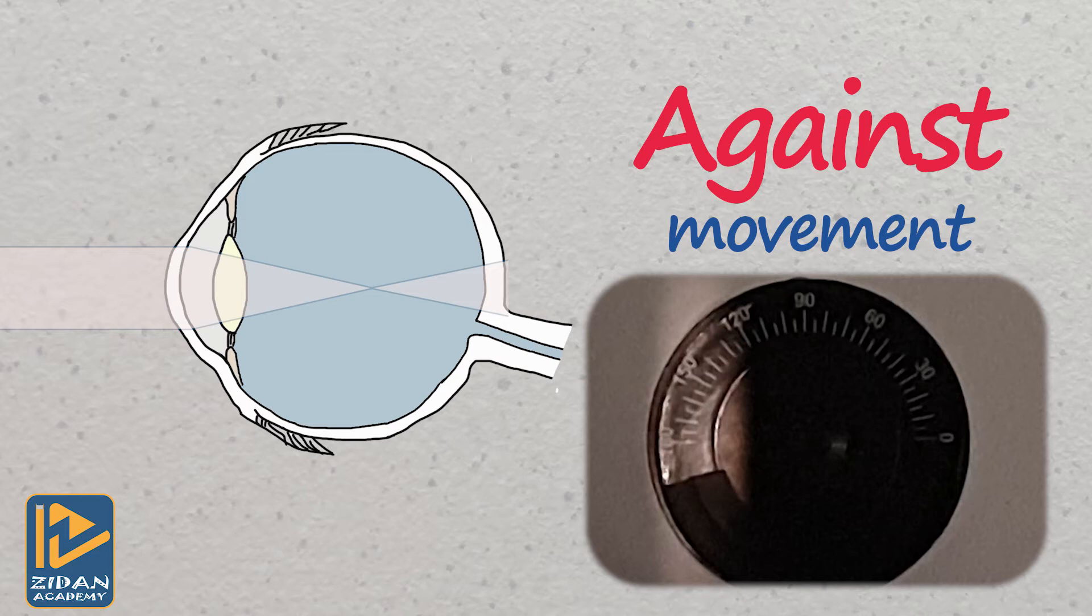So in this case, when you sweep your light across the pupil, you will see that the reflex is moving in the opposite direction to the moving light, as the light now falling on the retina is moving in the opposite direction of sweeping.